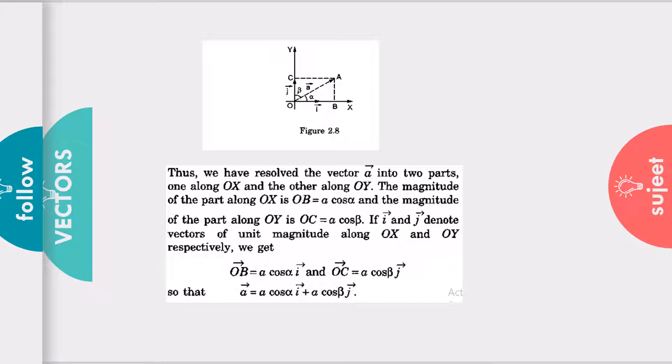The magnitude of the part along OX can be written as A cos alpha. Why? Because you know from trigonometry, OAB is a right angle triangle and OB will be OA cos alpha - it is the hypotenuse, it is the base, and cos alpha is base upon hypotenuse. Similarly, OC can be written with the trigonometry. So OB is A cos alpha, OC is A cos beta.